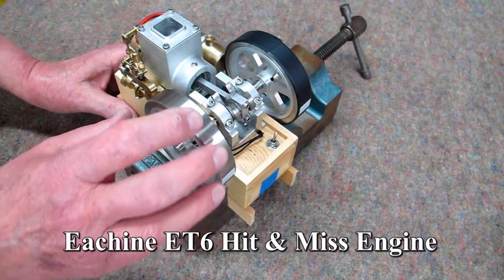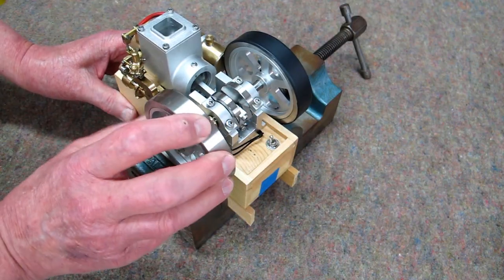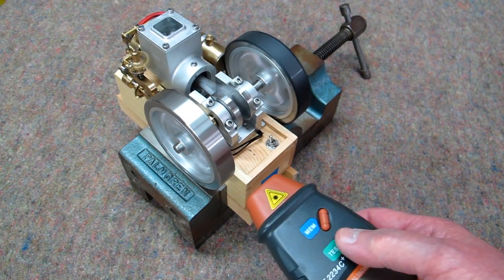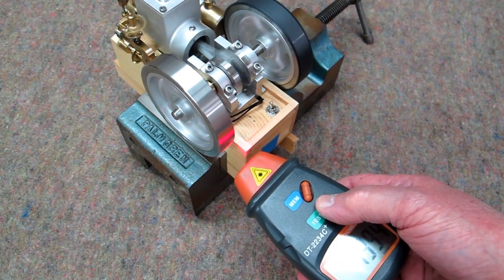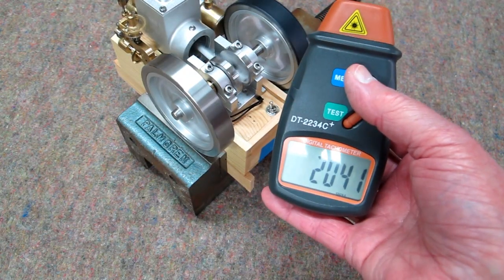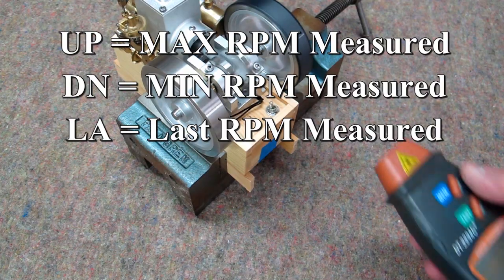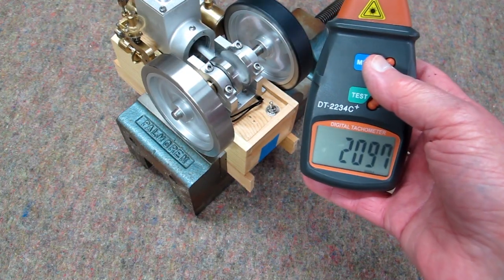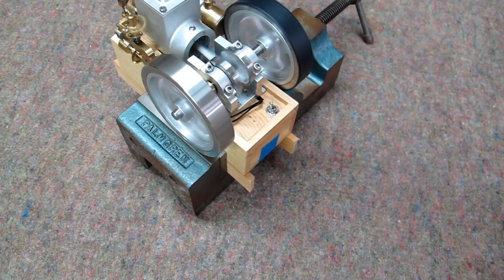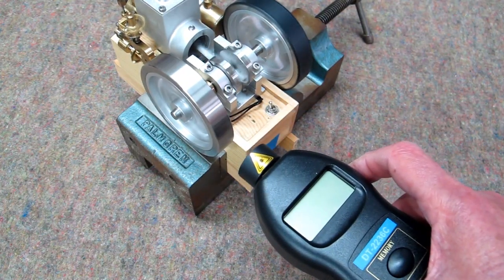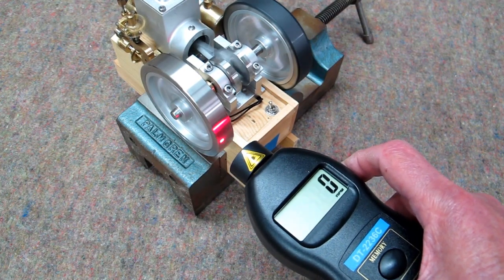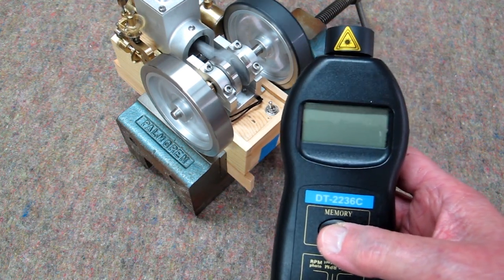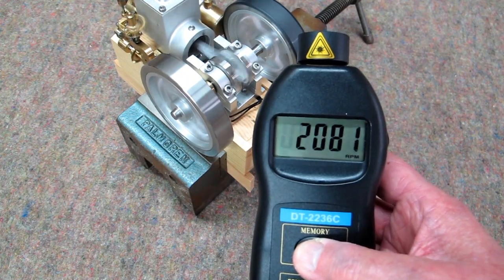I have the ET6 in a machinist vise. Keep it in one spot. So we're running about 2,000 RPM. About 2,000 RPM. This is a brighter laser and it's picking up more reflections off that shiny flywheel.